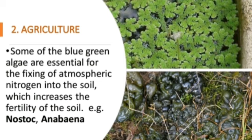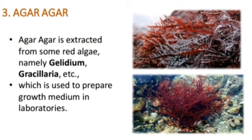In agriculture, some blue-green algae are essential for fixing atmospheric nitrogen into the soil, which increases soil fertility. Examples are Nostoc and Anabaena. Agar-agar is extracted from some red algae, namely Gelidium and Gracilaria, and is used to prepare growth medium in laboratories.